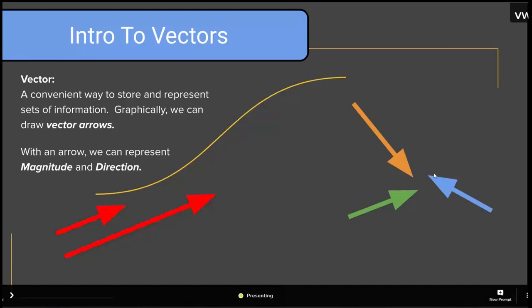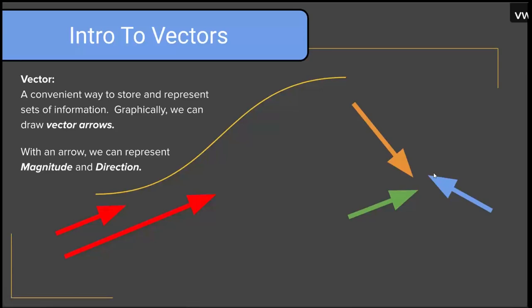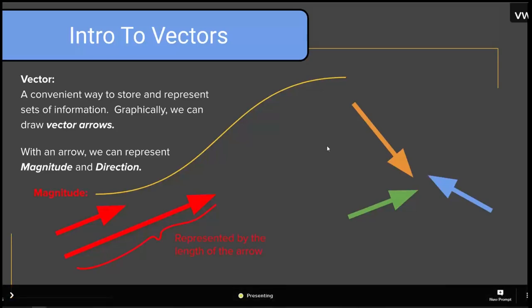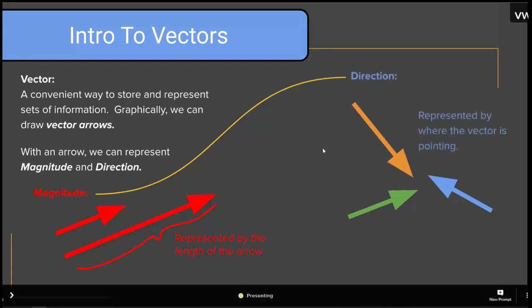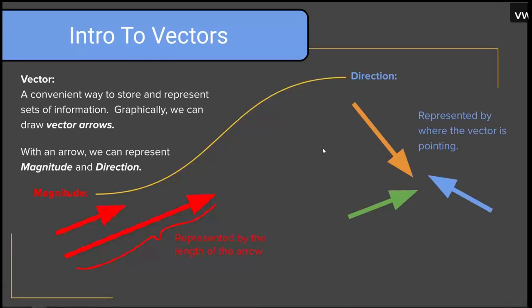A vector is a convenient way to store and represent sets of information. Graphically, we can draw vector arrows. With an arrow, we can represent magnitude and direction — two pieces of information stored inside a vector. The magnitude is represented by the length of the arrow, and the direction is represented by where the arrow is pointing towards.